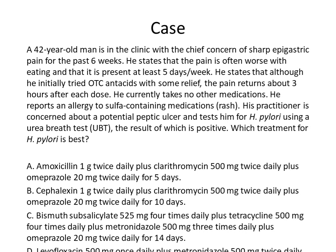A 42-year-old man is in the clinic with sharp epigastric pain for the past six weeks. He states that the pain is often worse with eating and is present at least five days per week. He initially tried OTC antacids with some relief, but the pain returned about three hours after each dose. He currently takes no other medication and reports an allergy to sulfa medications.